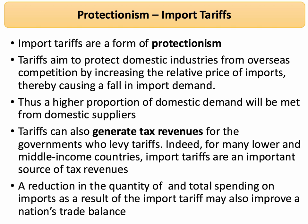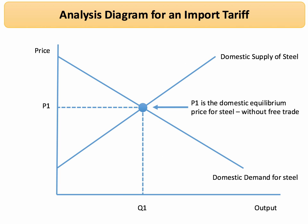Let's look at how a tariff actually works using an analysis diagram, working through it stage by stage. We'll take the market for steel. There's a domestic supply from home-based steel producers and a domestic demand from consumers — for example, those using steel in car making, construction, and other derived demands.